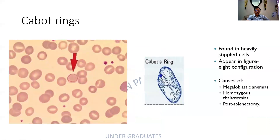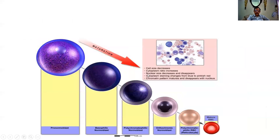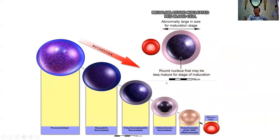This is a Cabot ring — look at this ring-like inclusion seen within the RBC. Sometimes it can be in the form of a figure of eight. It can be found in conditions such as megaloblastic anemia, thalassemia, and after splenectomy. This is normal erythropoiesis versus megaloblastic erythropoiesis. Compare the orthochromatic normoblast — small nucleus — with the megaloblast, where nuclear condensation lags behind cytoplasmic maturation.